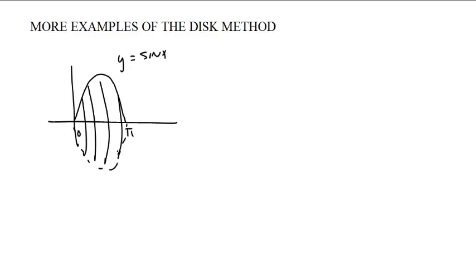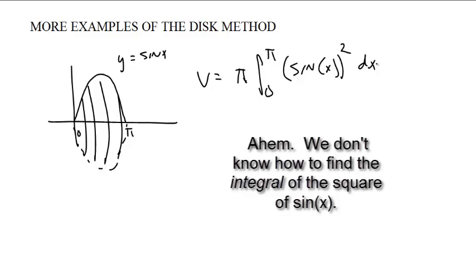Okay, let's have some more examples of the disk method. Suppose you had, let's say you just took the first lump of sine, y equals sine of x from zero to pi, and you rotate that around the x-axis, and you get some sort of weird lump. The volume is π times the integral from zero to π of the sine of x squared dx. Now, we don't know how to find the sine of x squared, so we'll leave it at that.